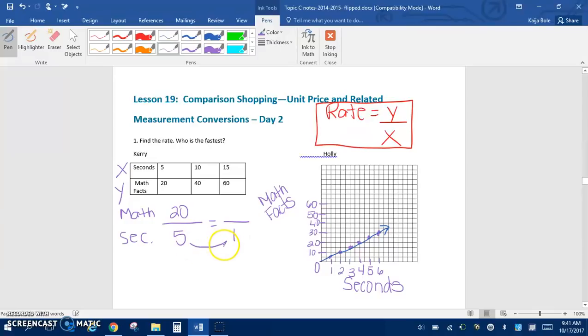So to get to 1 second, we would divide by 5 on the bottom. So we're going to divide by 5 on the top. So that means she can do 4 facts in 1 second.